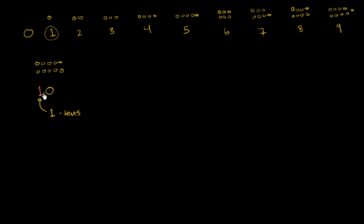This is literally saying one 10s plus zero ones. That's what this is saying. But we didn't have to reuse digits — we could have had more symbols. Maybe we would have created a new symbol. All of these had their own symbols, so instead of having to reuse the old ones, maybe we could have made the symbol star for 10.